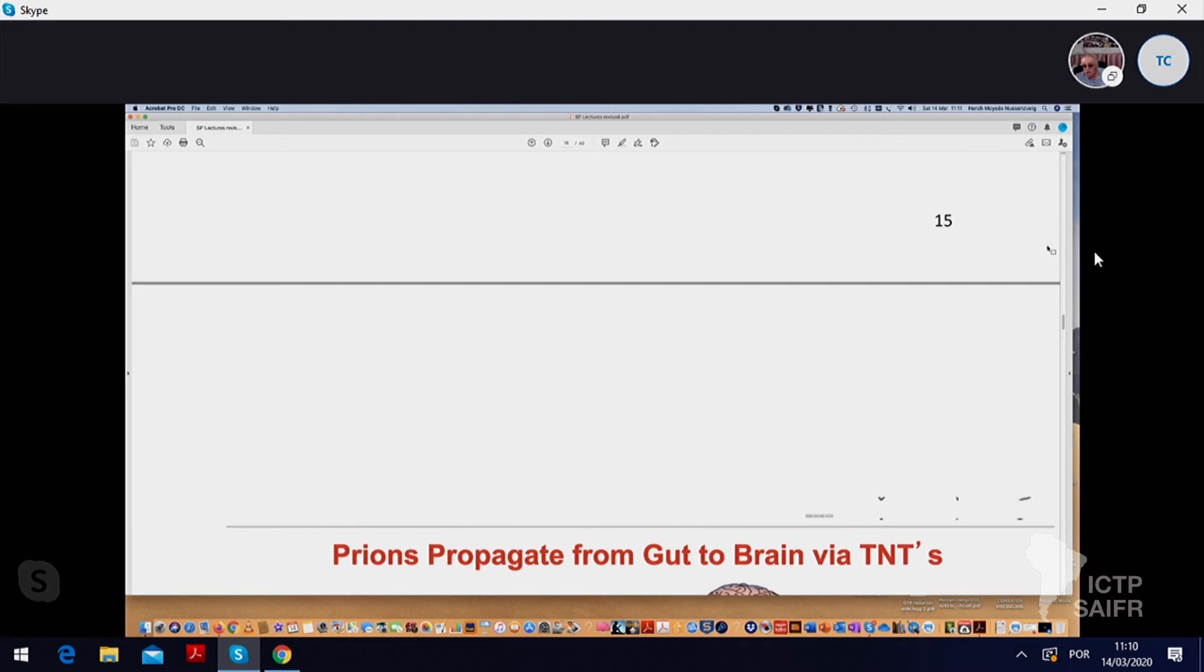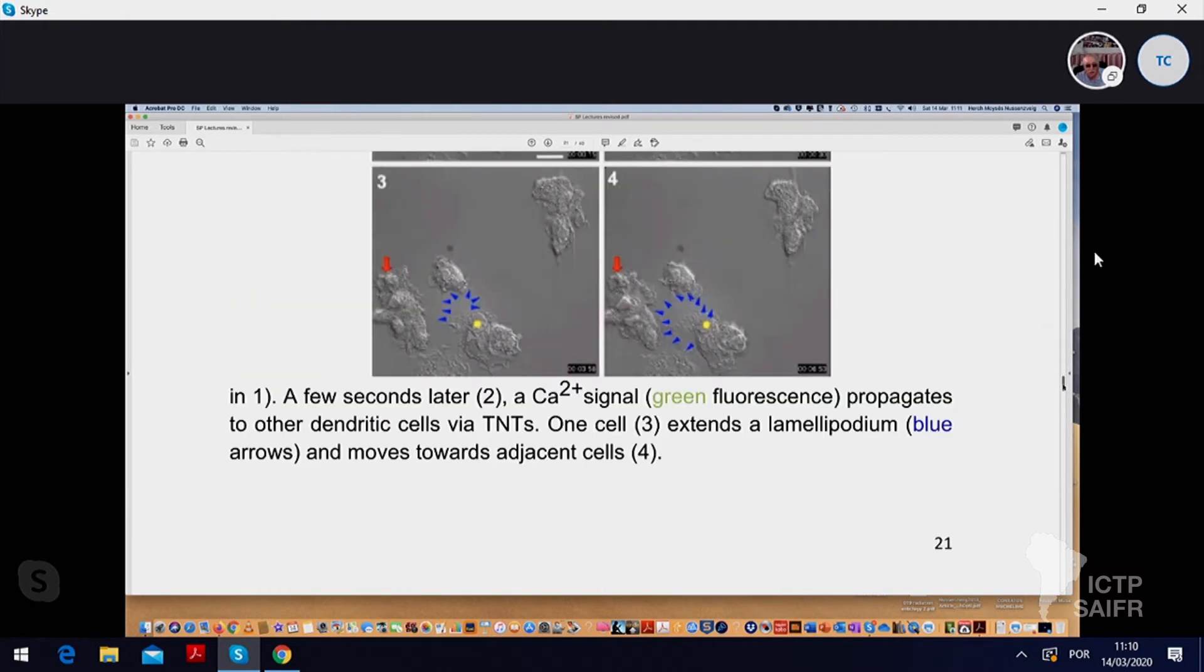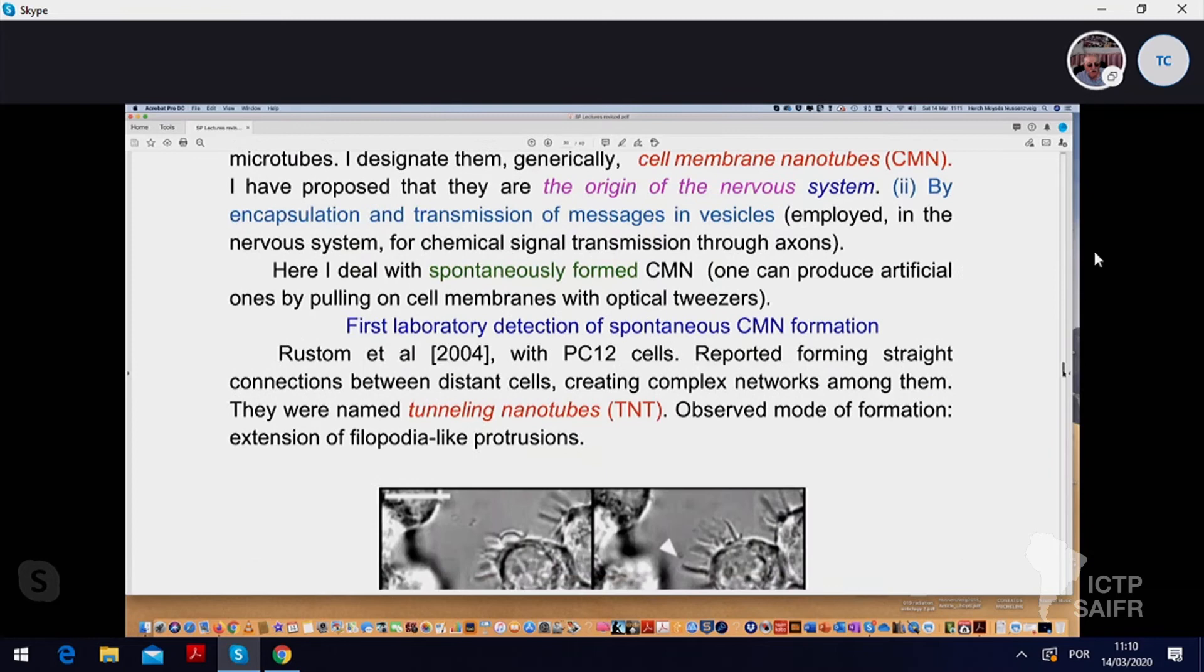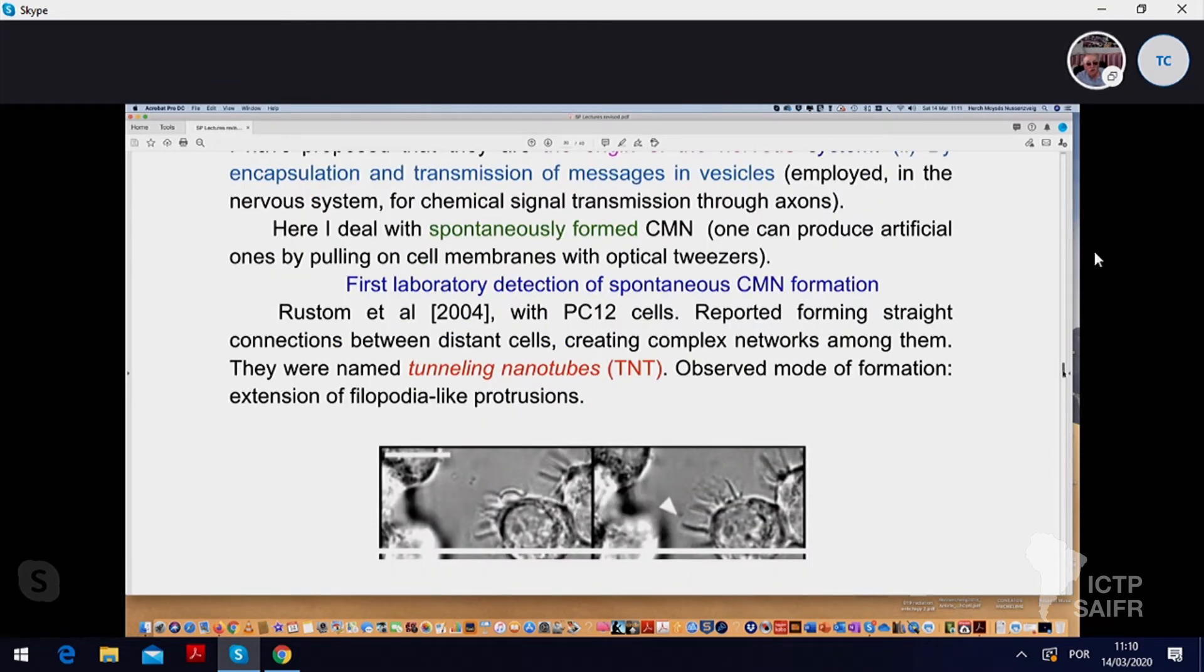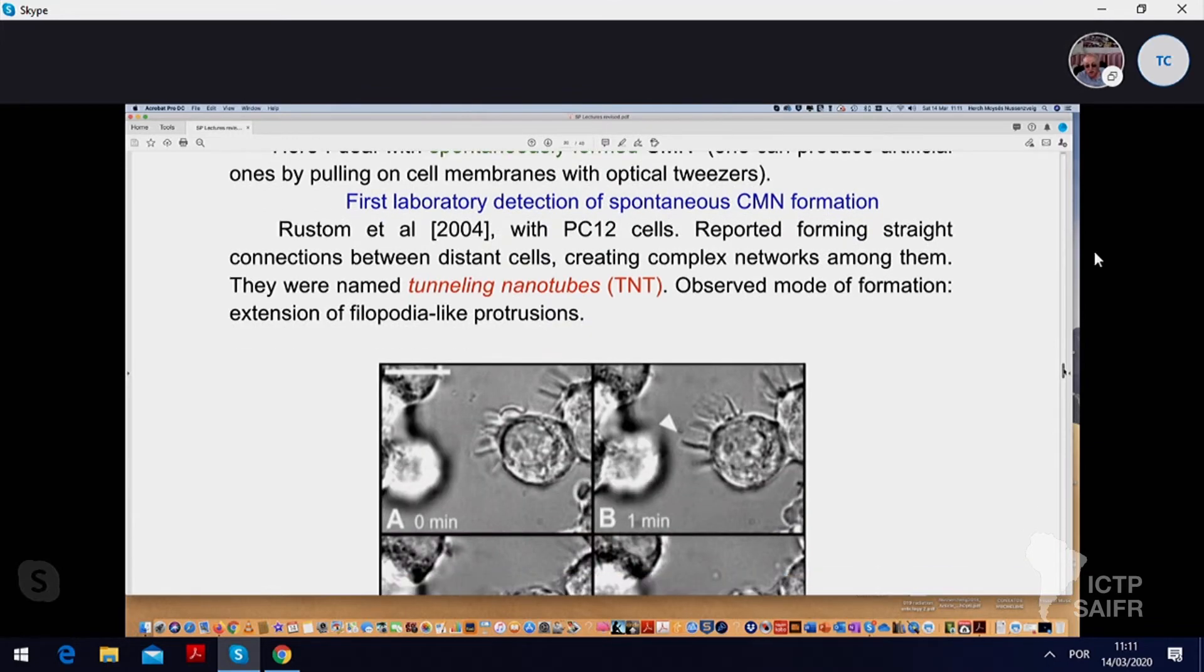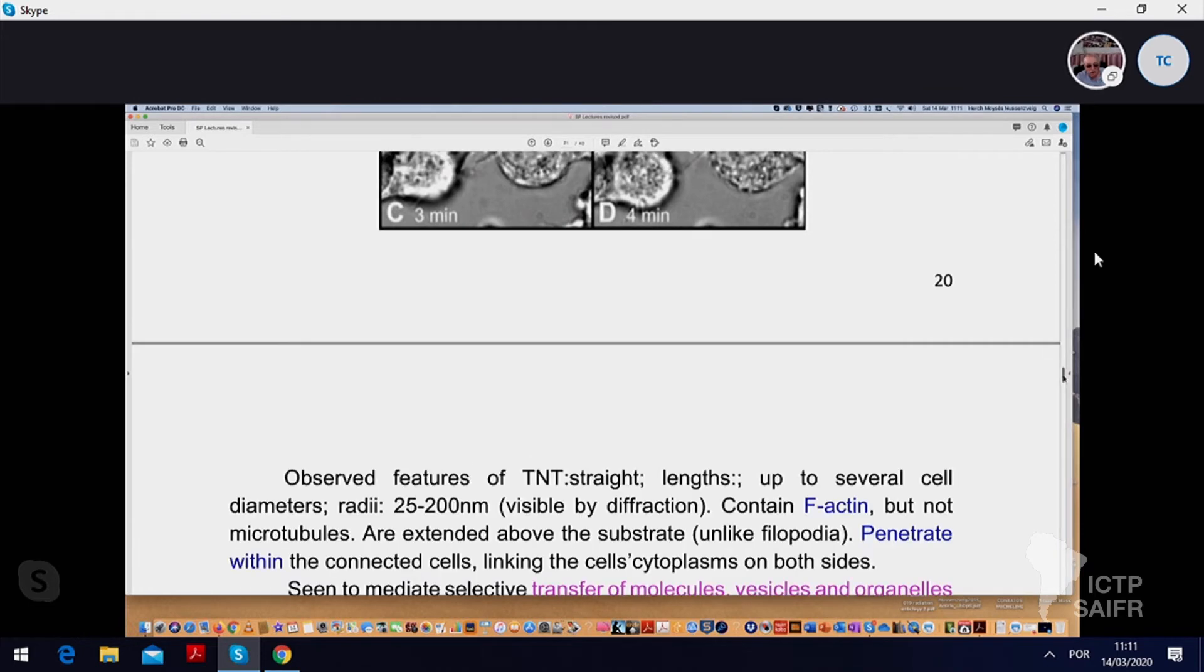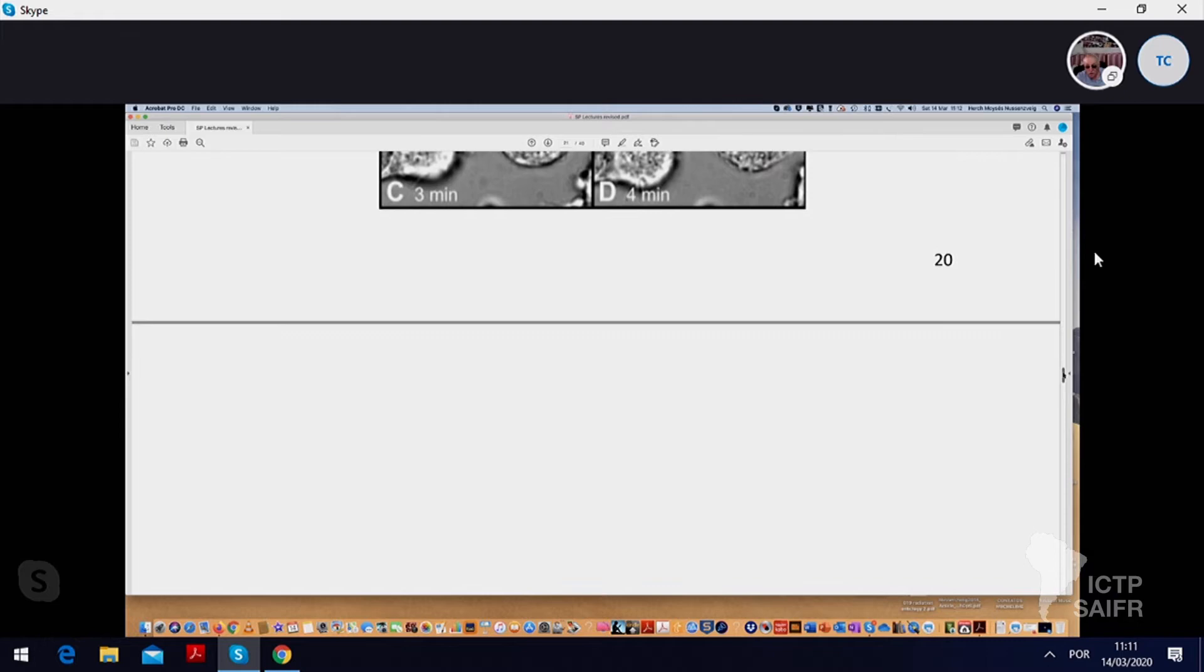I have given very many examples. As I have already told you, the first laboratory detection of this spontaneous CMN formation was in the paper by Rustem et al 2004 and there they named them TNT, tunneling nanotubes. I have already shown this picture for the way that they are formed. And I gave an idea of what the observed features were.